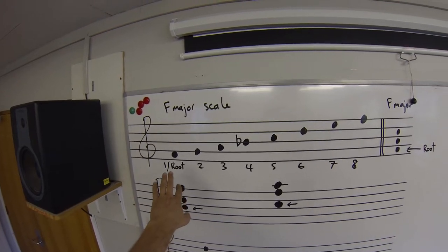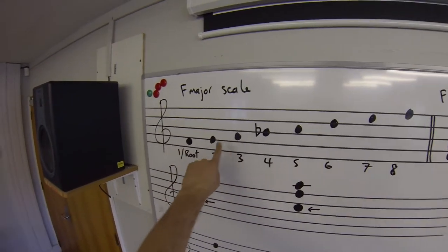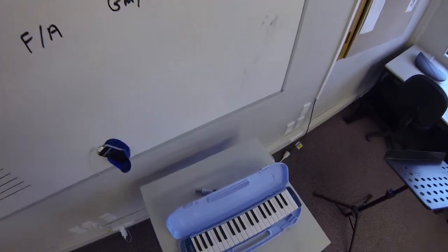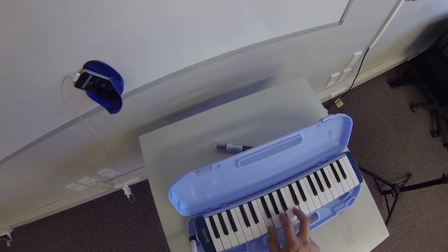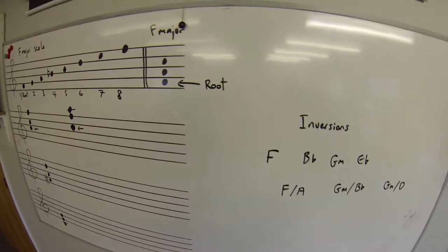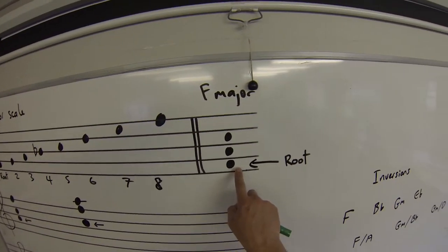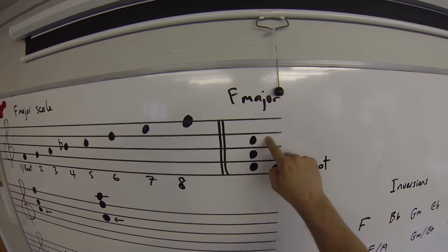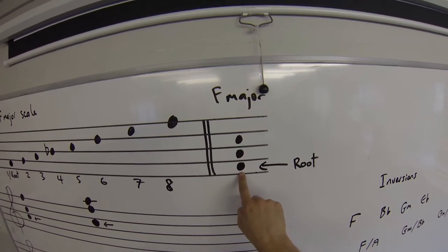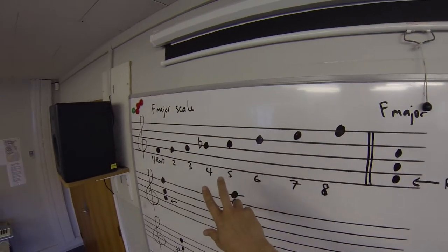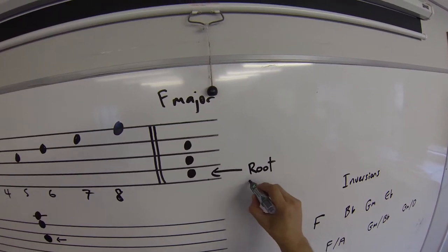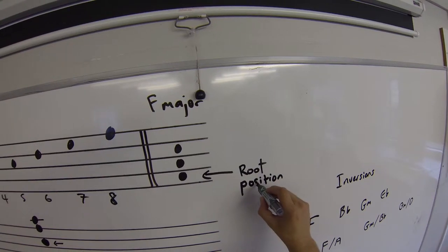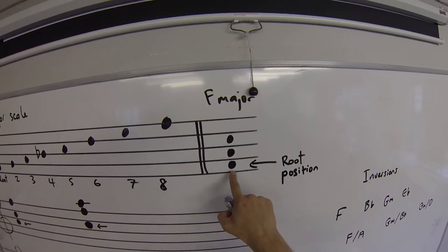Now if we make an F major triad out of that, we're going to take note one, note three, and note five. So you'll see them up here, and let's listen to how they sound. Now in this case, we're going to start to be attentive to which is the lowest sounding note. Well in this arrangement of an F major triad, this here is an F, which is the root note of the home scale. So this triad is called in root position.